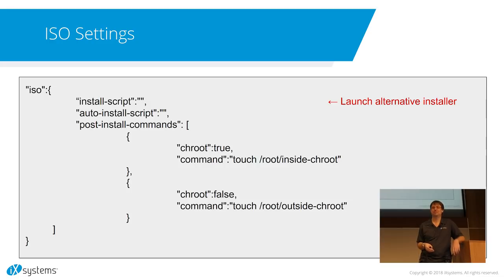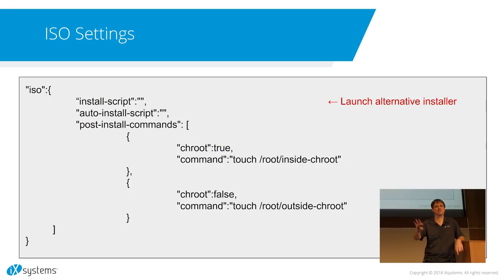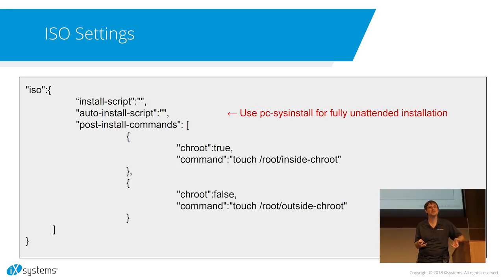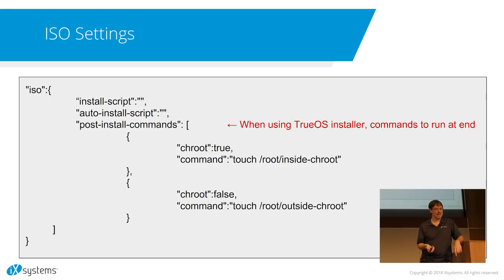For ISOs — install scripts. The text-based installer we use on TrueOS may not be the be-all end-all. Trident's a good example — they have a graphical installer, so we give them the option via the manifest to say skip the text installer and run this other script to launch the graphical installer. We also do unattended installations. You can give it a fully unattended installation script and it'll put that on your image — when you boot, a 10-second countdown and then it does the install automatically.